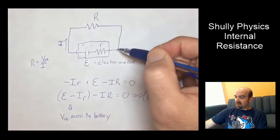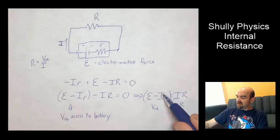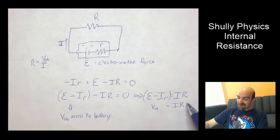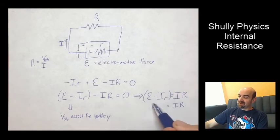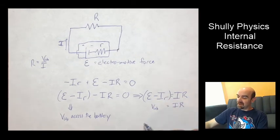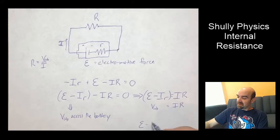If I decrease, that would increase the I, the current. And if I increases, then this term epsilon minus I r, what's going to happen to that?